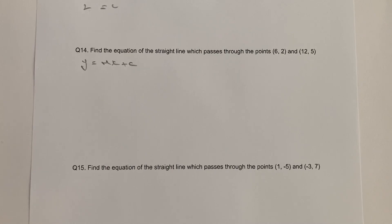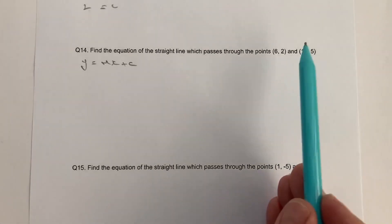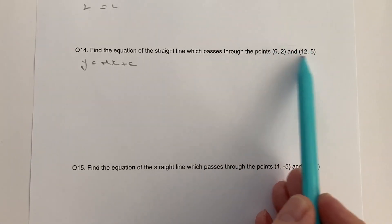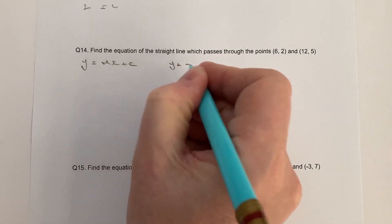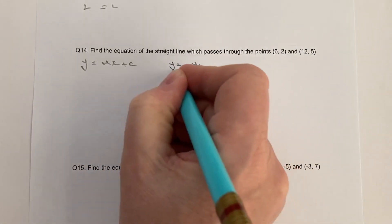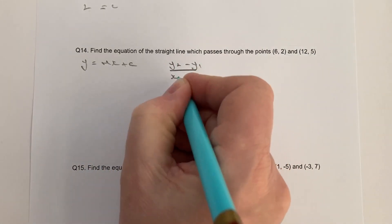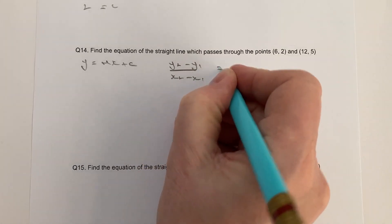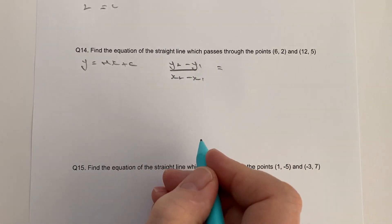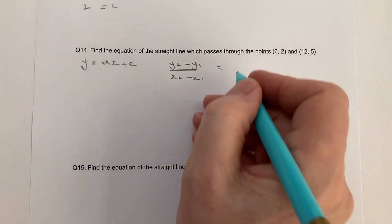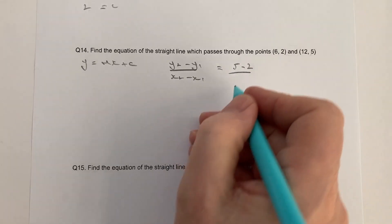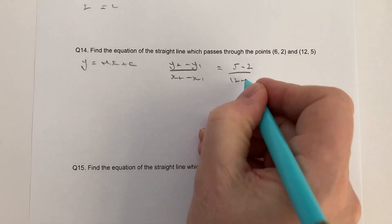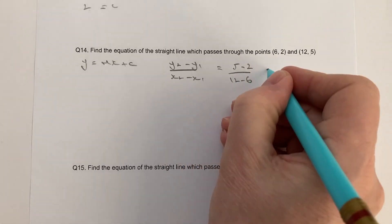The gradient — we're going to use these coordinates. So we're going to use y2 minus y1 divided by x2 minus x1, and that's going to equal 5 minus 2 divided by 12 minus 6.